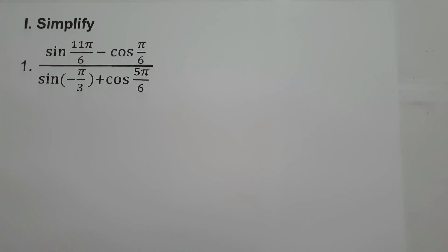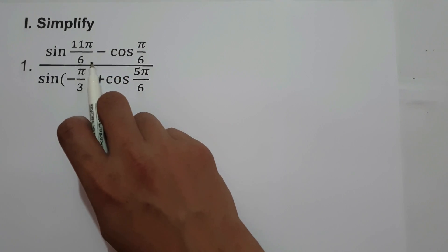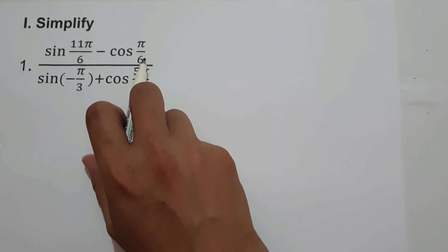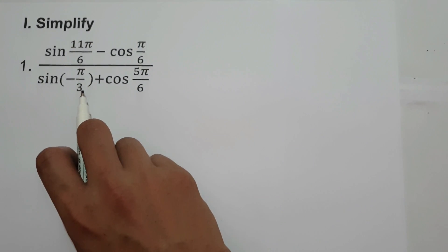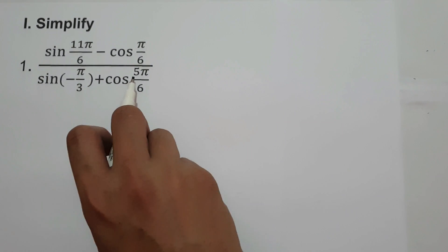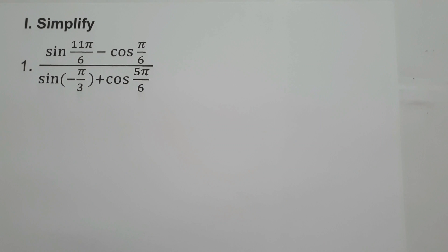In this video, we are going to simplify the given trigonometric expression: sine 11π over 6 minus cosine π over 6, all over sine negative π over 3 plus cosine 5π over 6. To find the exact value of the given expression, we are going to convert the given radians to degrees and use the reference angle to find the exact value of the given trigonometric functions.